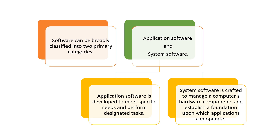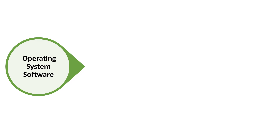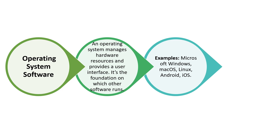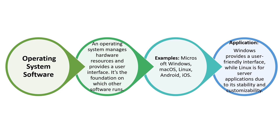In this video, we are going to see the specific types of software. The first one is operating system software. This is a system software that manages the hardware resources and provides a user interface. It is the foundation on which other software runs. Examples include Microsoft Windows, Mac OS, Linux, Android, and iOS. Windows provides a user-friendly interface, while Linux is used for server applications due to its stability and customizability.